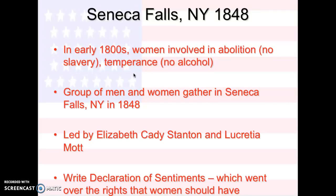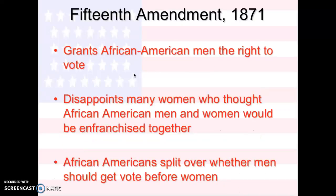A group of men and women gathered in a place called Seneca Falls, New York, in 1848. And this was led by Elizabeth Cady Stanton and Lucretia Mott. They wrote, based off of the Declaration of Independence, their own Declaration of Independence — it's called the Declaration of Sentiments. It went over the rights that women should have, and we're going to look at that in class.